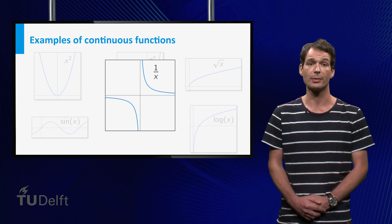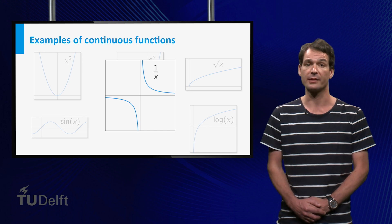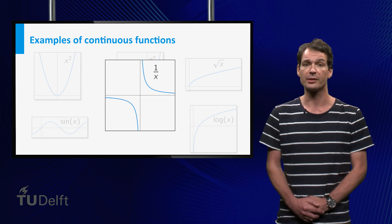Sometimes this causes confusion because the graph makes a jump at x equals 0, but this is not a point in the domain.